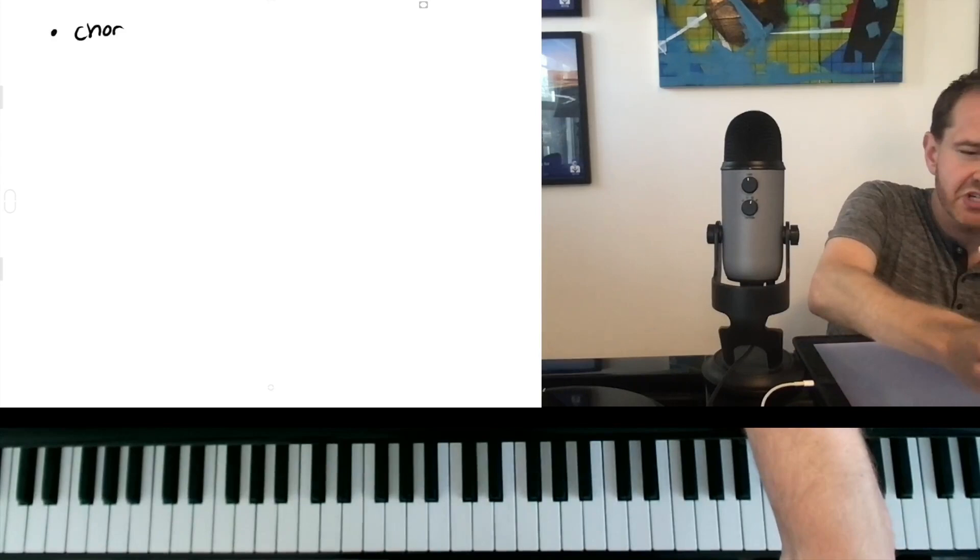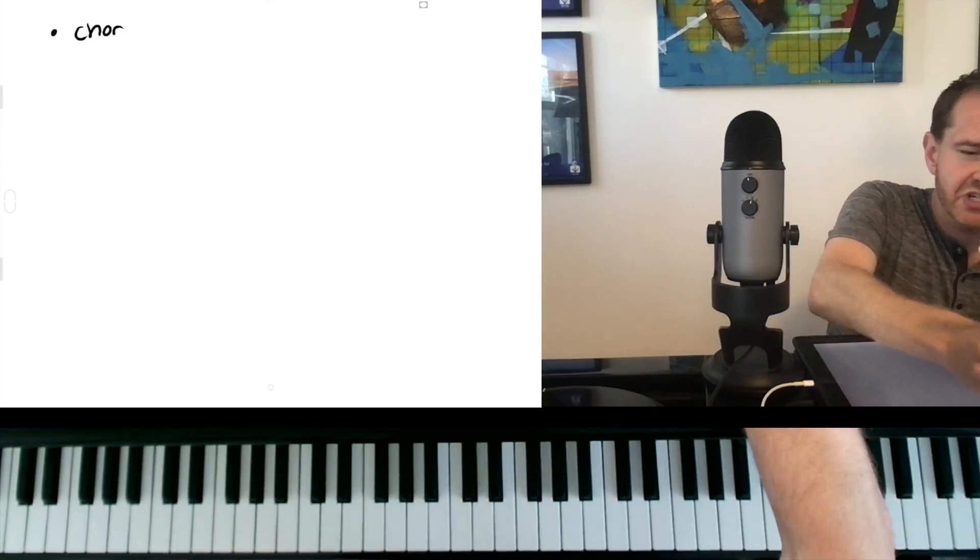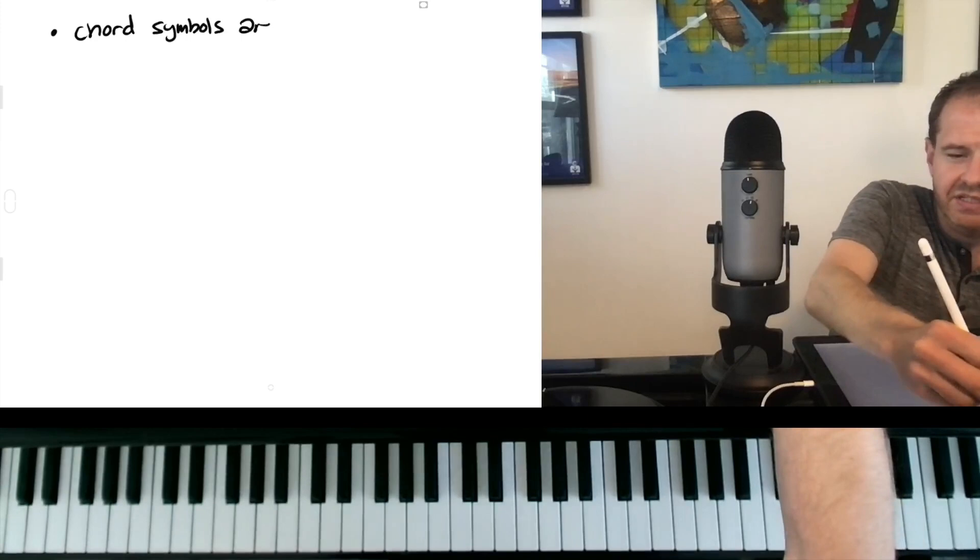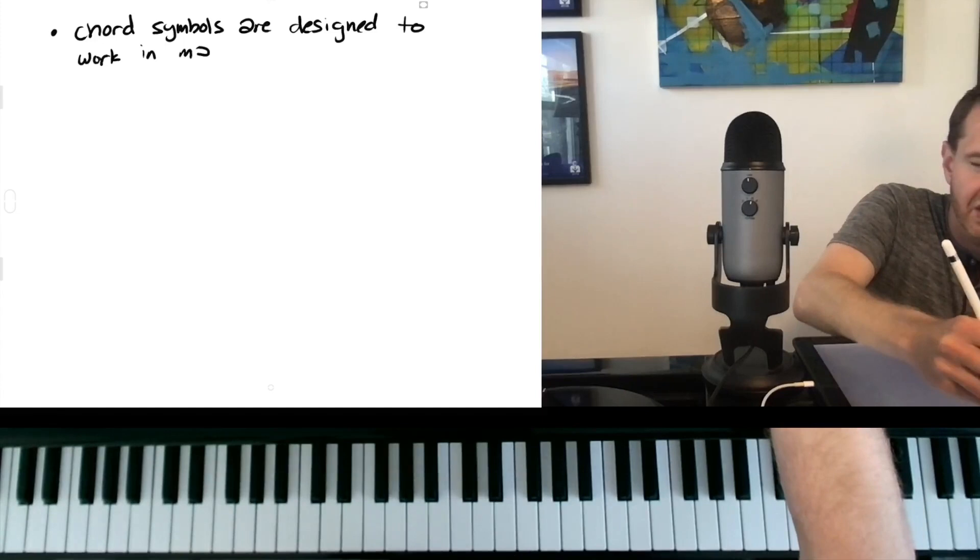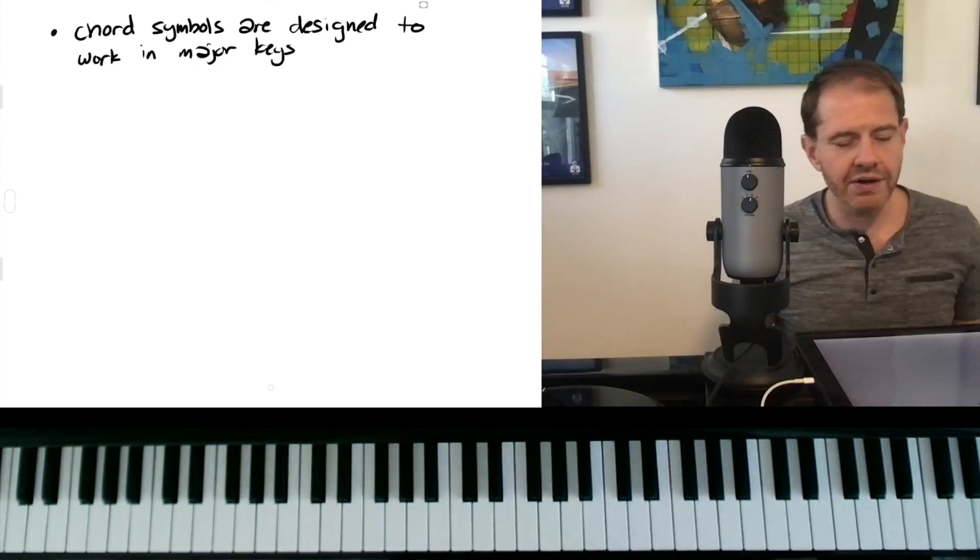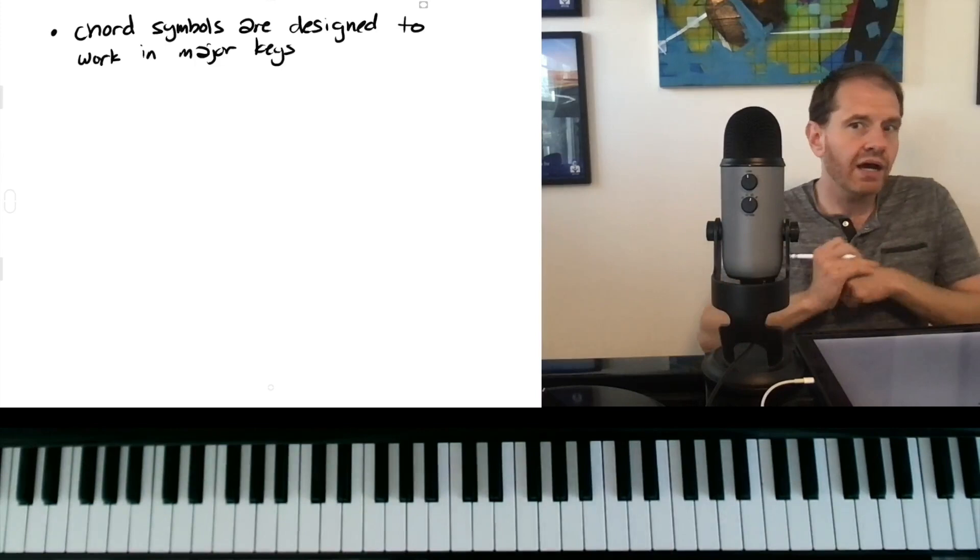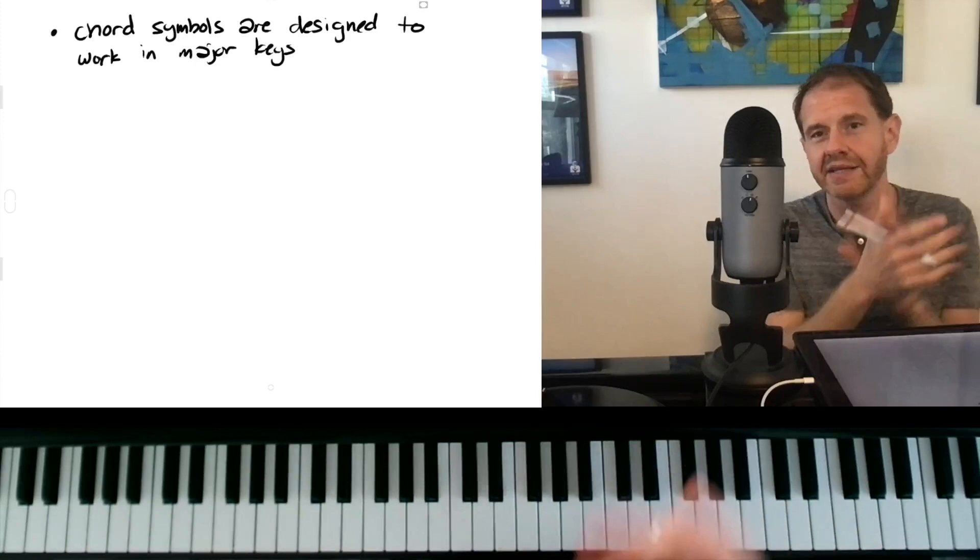So I want to put my professor hat on, take some notes and share some of the things that I'm learning about how to teach minor two five ones. So the first thing that I would say, which is just important to recognize, is that chord symbols really are designed to work in major keys. We live in a major centric universe. And so one of the things that I'm realizing is that we look at minor keys and we think about how we have to change this dominant chord to be these ways.